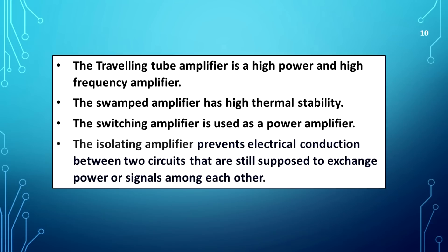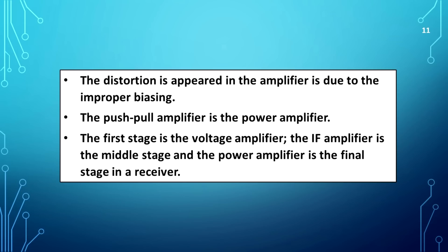The isolating amplifier prevents electrical conduction between two circuits that are still supposed to exchange power or signals among each other. Distortion appearing in the amplifier is due to improper biasing. The push-pull amplifier is the power amplifier.